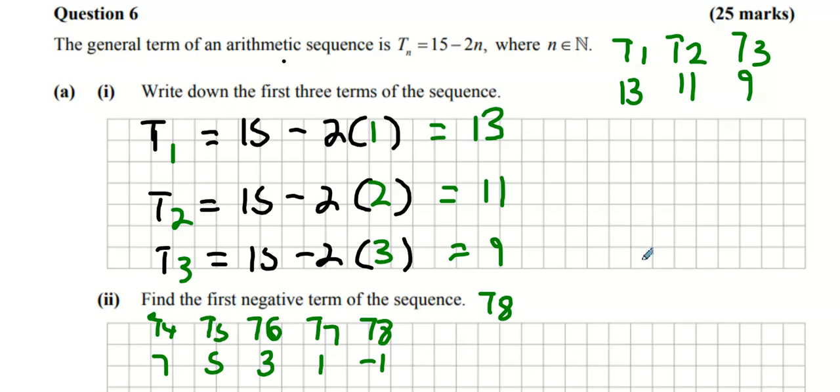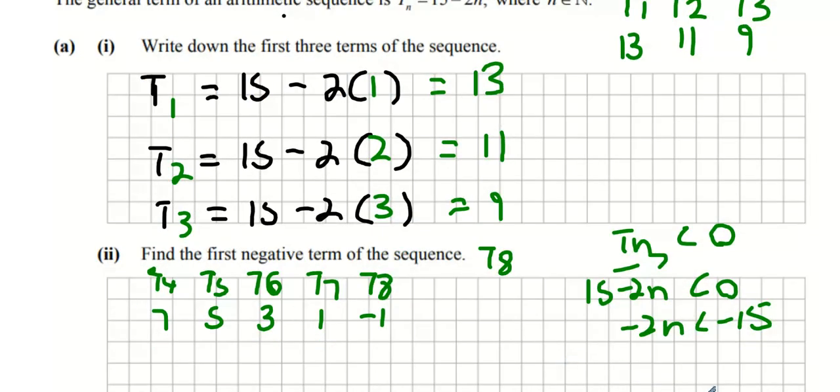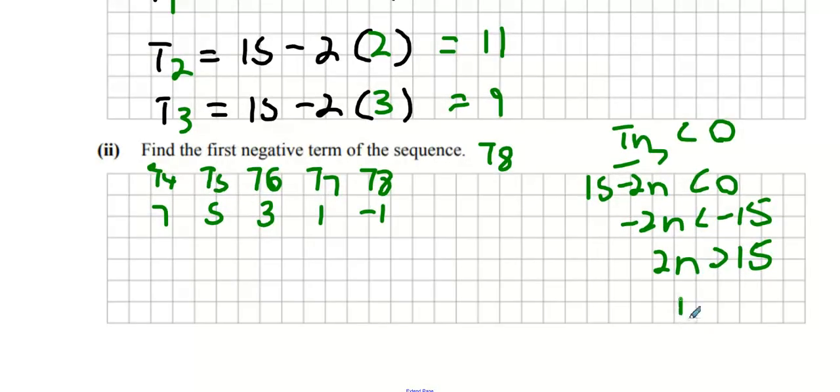You could say that your Tn answer has to be smaller than zero, so 15 minus 2n has to be smaller than zero. You could bring your 15 to the other side, you could say minus 2n is less than minus 15. Both sides are negative, it's an inequality, so multiply both sides by positive and then you get an n value bigger than 7.5, and the n value bigger than 7.5 is an n value of 8, hence the term T8.